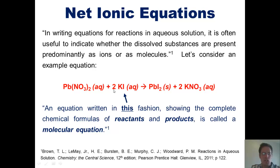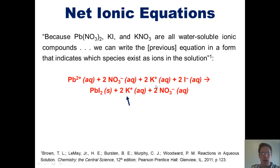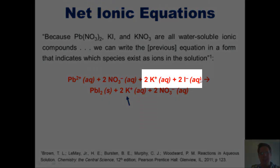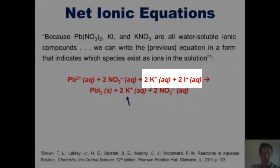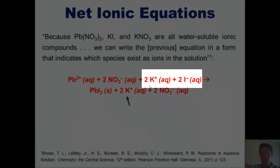Because there is a 2 as a coefficient in front of this whole compound, each of the individual ions — potassium plus and iodide minus — also get an individual 2 in front of them. What that essentially means is that when you take 2 moles of potassium iodide and throw it into water, they separate out into 2 moles of K⁺ and 2 moles of I⁻, which are completely separate.